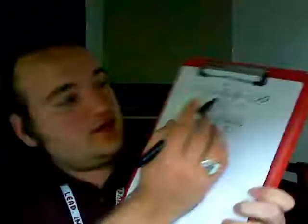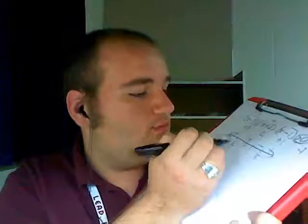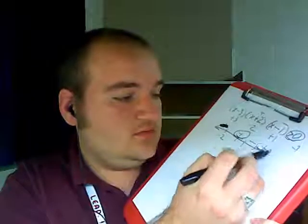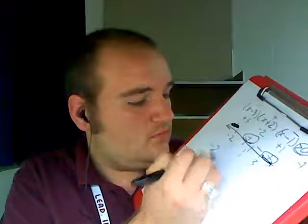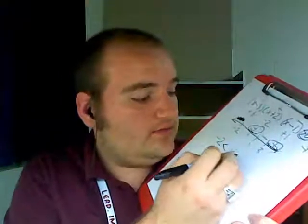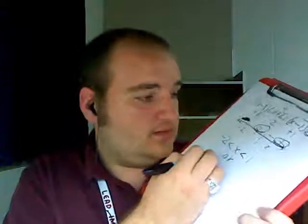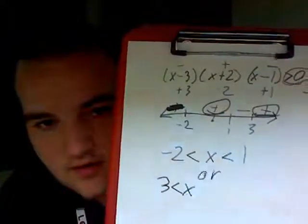You want greater than zero. Greater than zero means positive. It's supposed to be negative. So circle that, circle that. The values you want for x will be greater than negative two and less than one, or x is greater than three. Right there — it's a number line. Easy shmeasy.